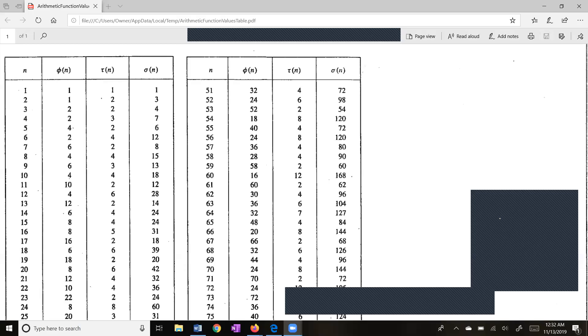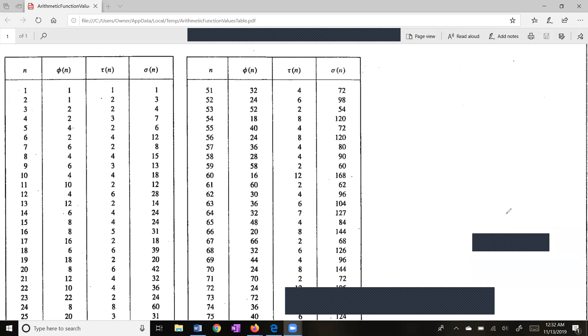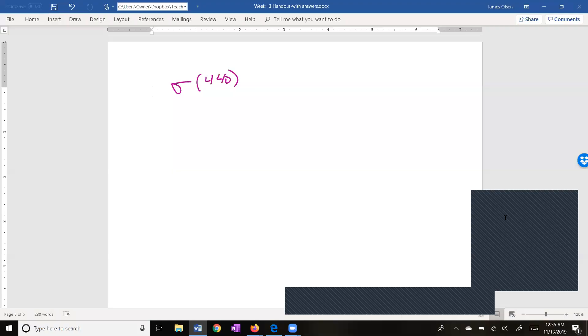Now let's do some examples. Let's find sigma of 72. So let me get my pen here. Sigma of 72. We come down here to 72 and we come over here to sigma and we get 195. Now this table only goes up to 100. So what are we going to do if we want to find one of these arithmetic function values greater than 100? We can use the multiplicative property.